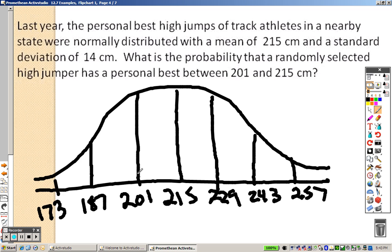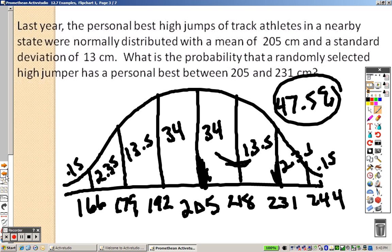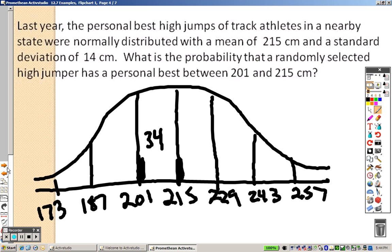So, we're supposed to find between 201, which is right here, and 215. Well, that's just, and you can look back, because I already filled them all in, that is in between this area right here, which is the 34% one. So, literally, it's just 34% is your answer. So, 34% is your answer, and that's it.